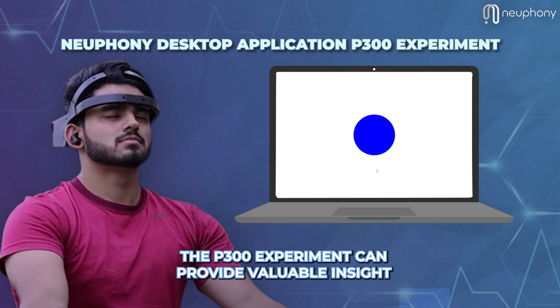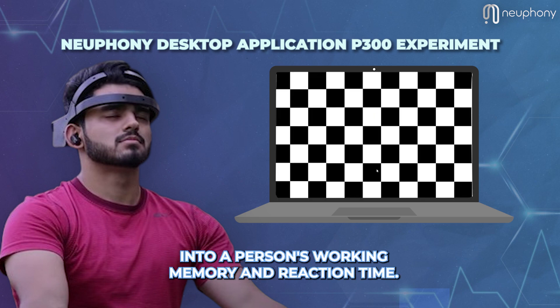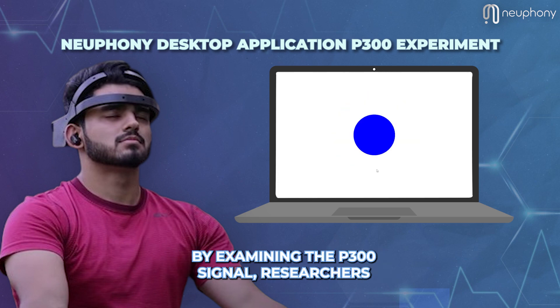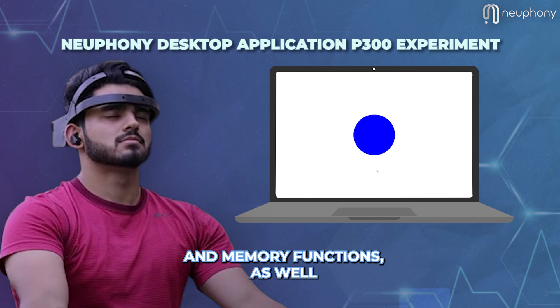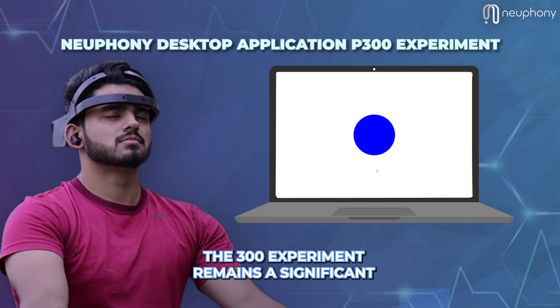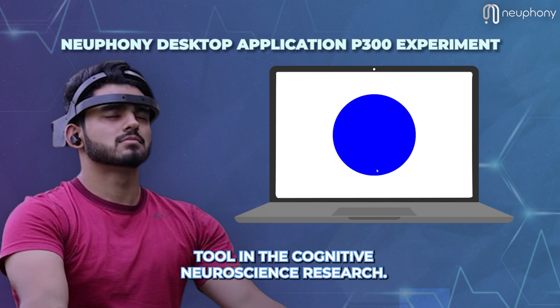The P300 experiment can provide valuable insight into a person's working memory and reaction time. By examining the P300 signal, researchers can assess attention, cognitive processes, and memory functions as well. As our understanding of the brain continues to evolve, the P300 experiment remains a significant tool in cognitive neuroscience research.